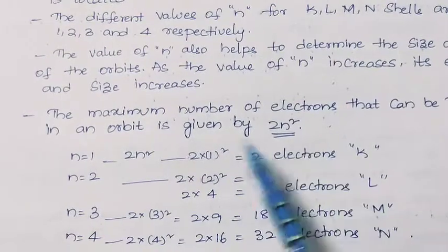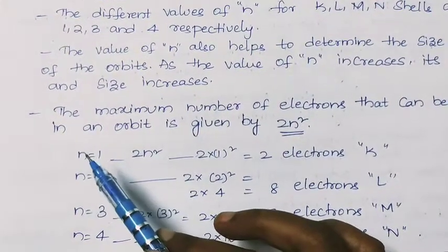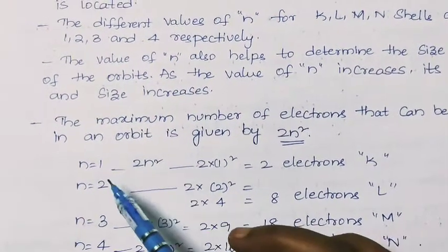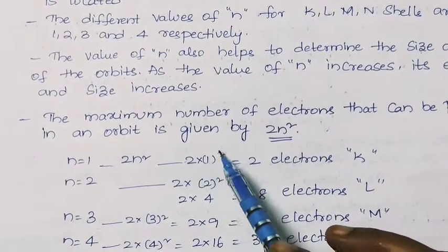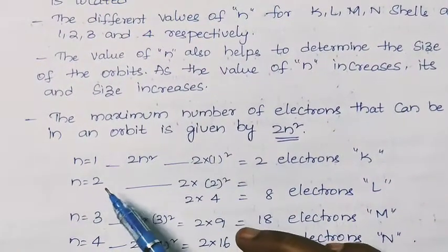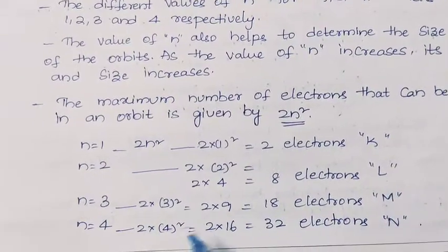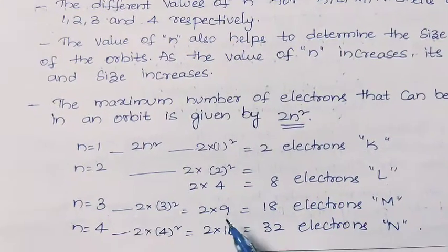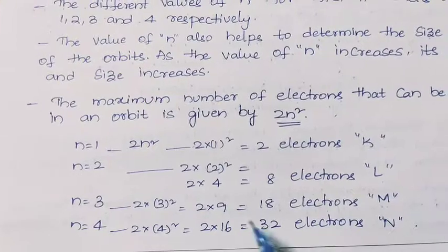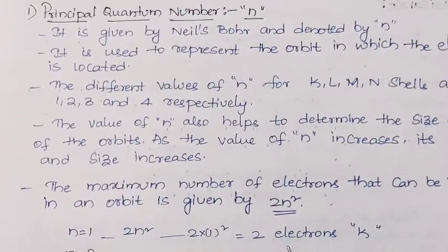Using the formula 2n², we calculate the number of electrons in each shell. When n = 1, it is 2 × 1² = 2 electrons in the K shell. When n = 2, there are 8 electrons in the L shell. When n = 3, there are 18 electrons in the M shell. When n = 4, there are 32 electrons in the N shell. This is all about the principal quantum number.